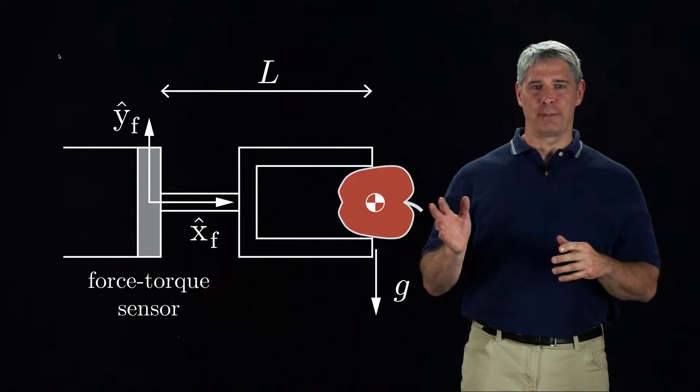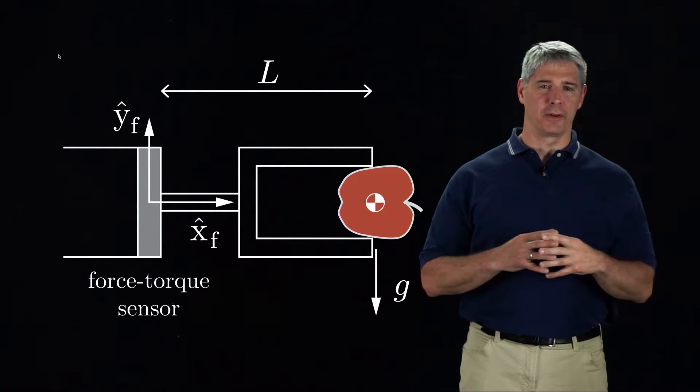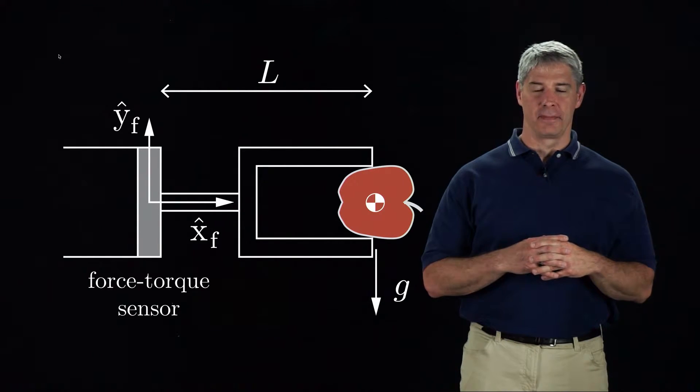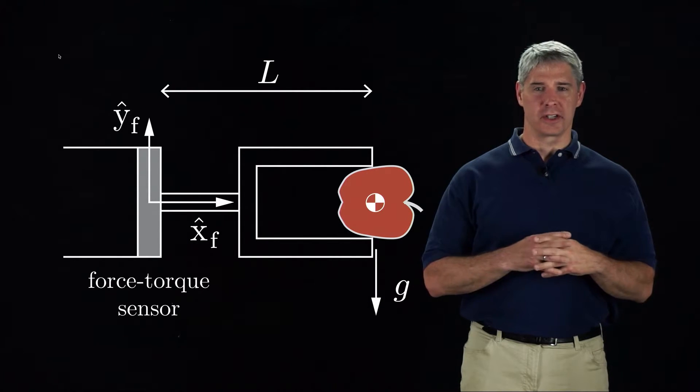A robot hand is holding this apple in gravity, and the robot is equipped with a force-torque sensor at its wrist. It measures forces and torques in the frame F.